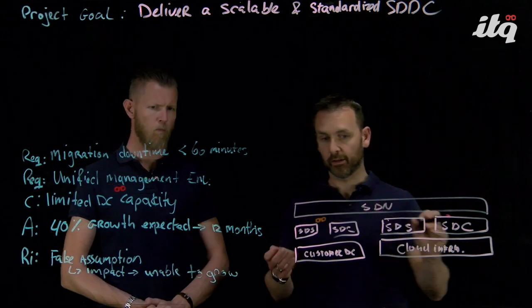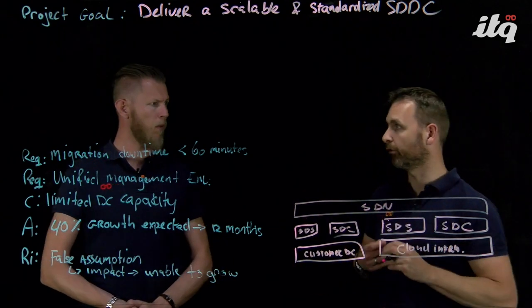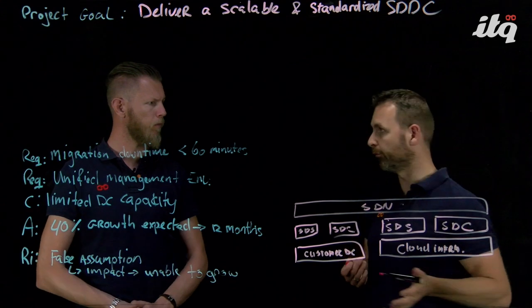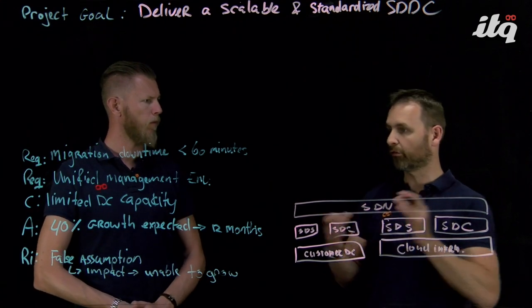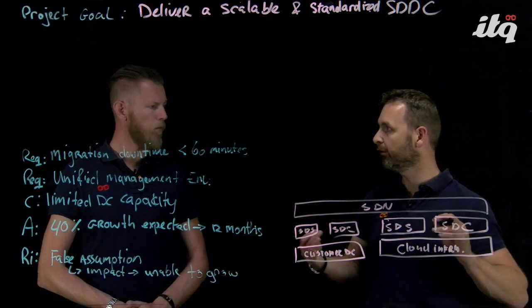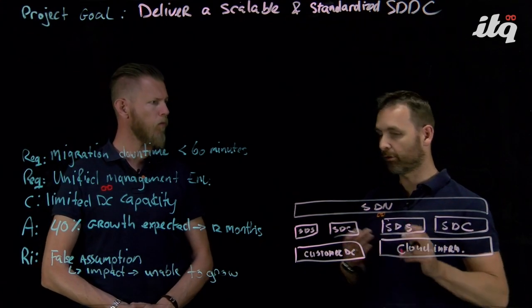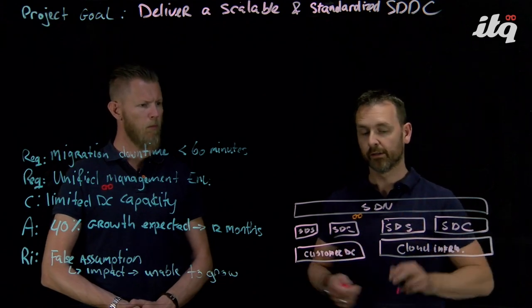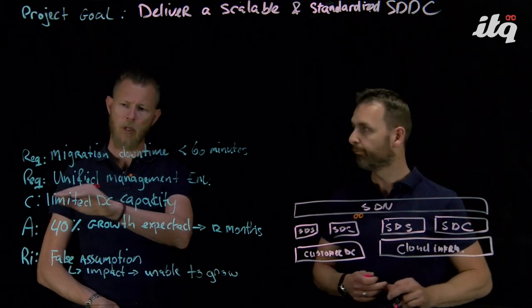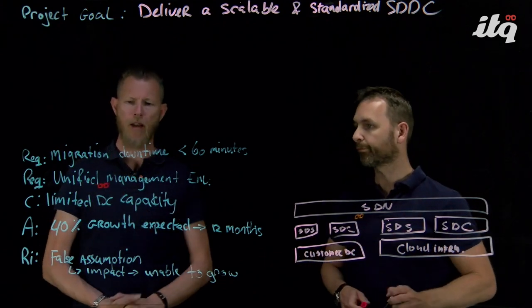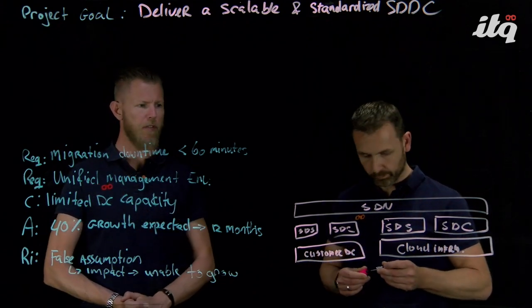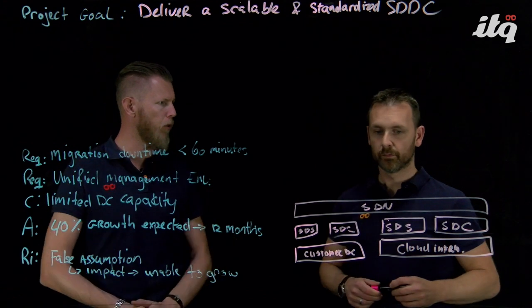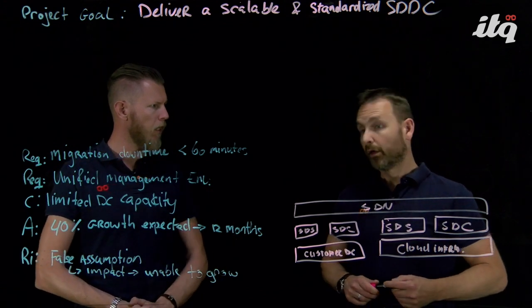From a conceptual perspective, the software-defined network will be stretched across these two infrastructures — that's the SDN layer — because we're going to deliver workload mobility. We need to extend our data center so that workloads can move to the cloud and back. One of the requirements was to have a unified management environment, and this is essential to achieve that.